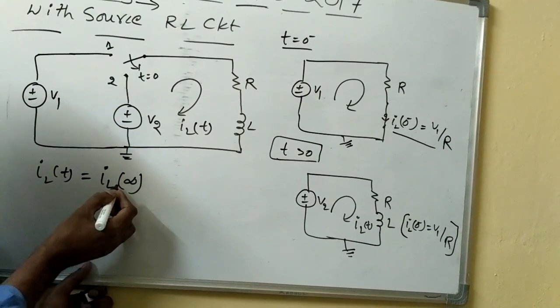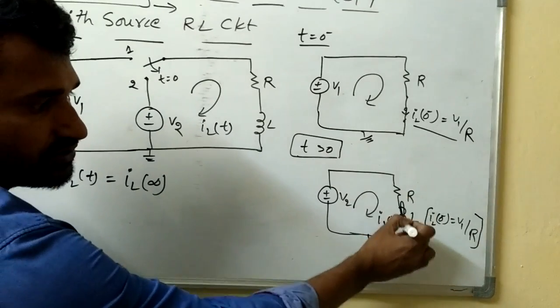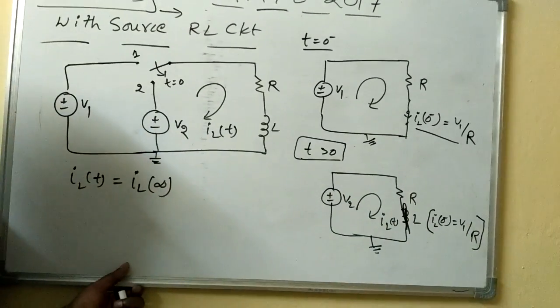iL of t is equal to iL of infinity, that is, at infinity, what is the circuit will become, again, it will become short circuit, so I can get iL of infinity value.